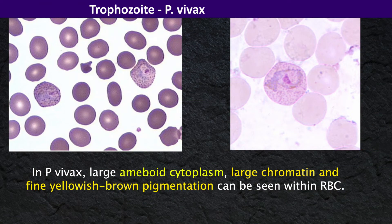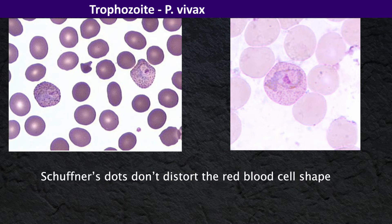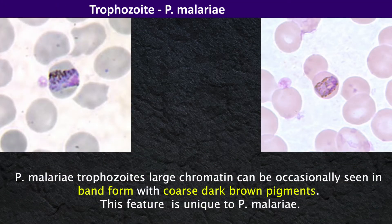In Plasmodium vivax, large amoeboid cytoplasm, large chromatin, and fine yellow-brown pigmentation can be seen within red blood cells. But unlike Plasmodium ovale infections, the Schüffner's dots seen in Plasmodium vivax don't distort the red blood cell shape — it actually stays more rounded without a feathered edge. In Plasmodium malariae trophozoites, large chromatin can occasionally be seen in band form with coarse dark brown pigments; this feature is unique to Plasmodium malariae.